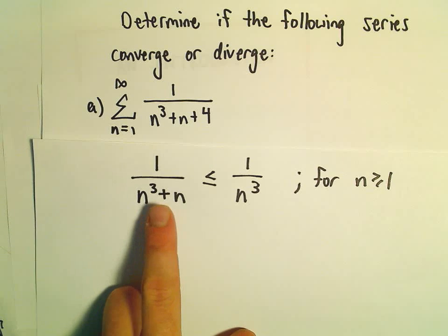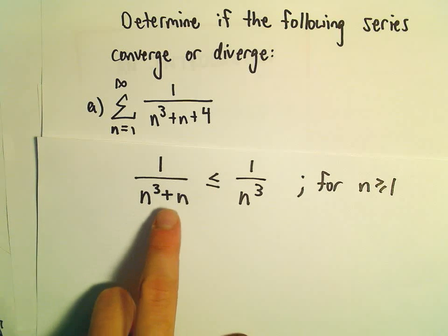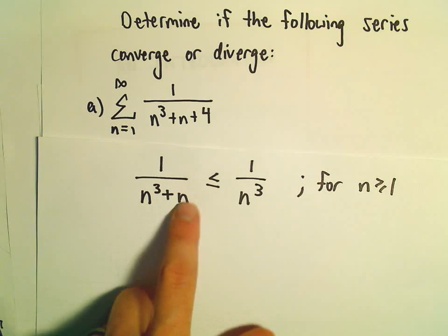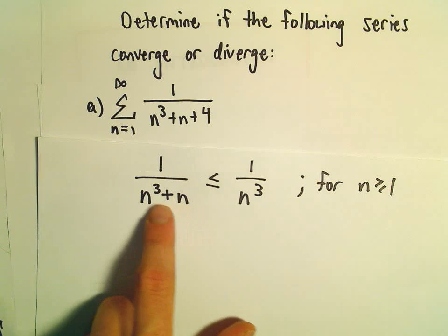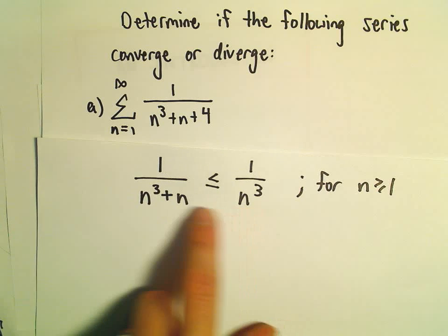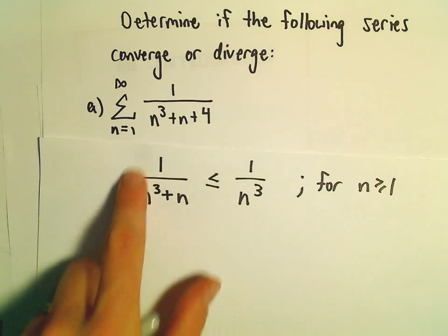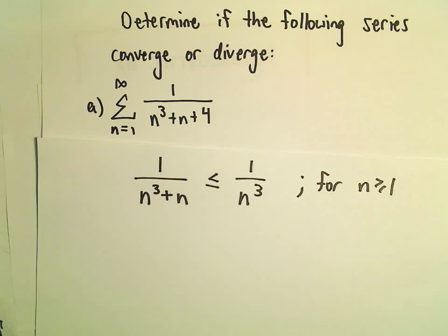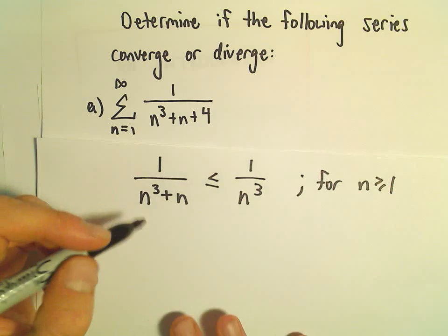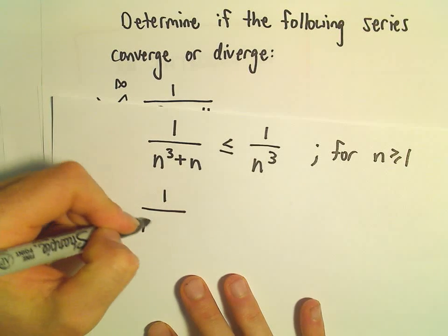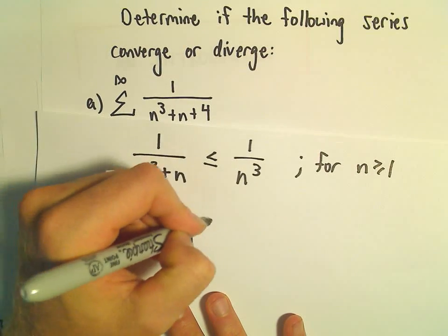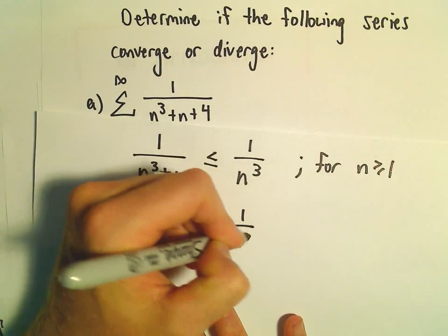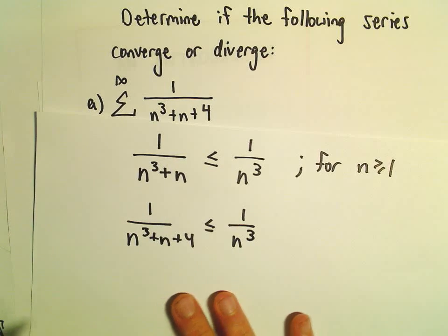This makes sense because since we're adding n, the denominator of the left side must be bigger than the denominator on the right side. A bigger denominator makes for an overall smaller fraction. Likewise, 1 over n cubed plus n plus 4, by the same reasoning, would be smaller than 1 over n cubed.